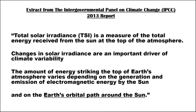The IPCC states that changes in solar irradiance are an important driver of climate variability. The causes of such changes are various. This video will focus on those changes caused by the Earth's complex orbital path around the Sun.